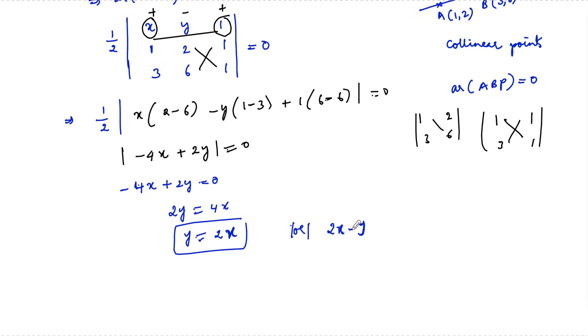Therefore, 2x minus y equals 0 is the required equation of the line passing through the two points. Hence the equation of the line joining (1,2) and (3,6), found with the help of determinants, is 2x minus y equals 0.